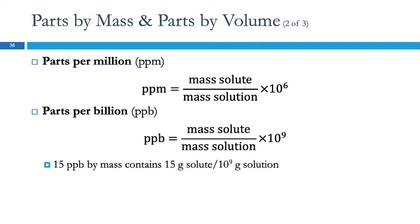Then we also have parts per million and parts per billion. These are useful when the concentrations are such that a percent gives you a really tiny number. You'll see these on the water quality report the city sends out every year — they'll list all the things they test for and tell you the concentration in the city water. Most of those things are in parts per million or parts per billion. It's easier to say 15 parts per billion than 0.000000015%.